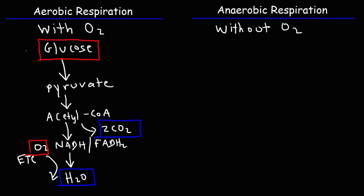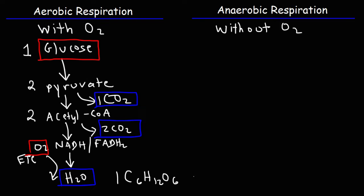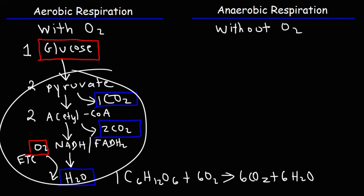One molecule of glucose yields two molecules of pyruvate, which yields two molecules of acetyl coenzyme A, and during pyruvate oxidation we get one molecule of CO2. So for two pyruvate molecules we get two molecules of CO2 during oxidation and four molecules of CO2 during the Krebs cycle, which totals six CO2 molecules. The overall chemical equation for aerobic cellular respiration is: C6H12O6 reacts with six oxygen molecules to produce six CO2 molecules and six water molecules.